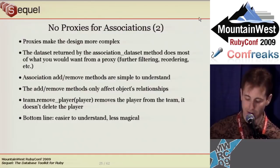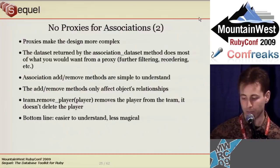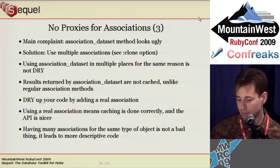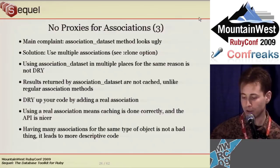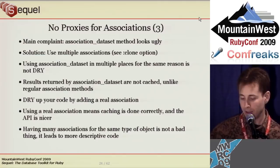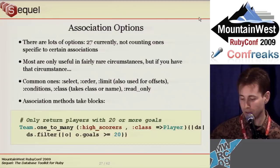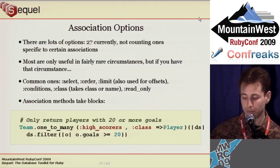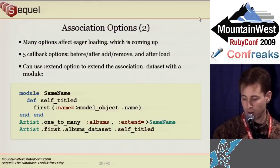Note that add and remove methods affect only the association — the remove method does not delete the object from the database. Some people find 'association_dataset' an ugly method name, but accessing the dataset should be less frequent than accessing the associated objects. If you find yourself using the dataset a lot with different filters, you should add multiple associations with those filters built in — doing so leads to more descriptive code. I added the clone option to make this easier. Clone is only one of about 30 current association options. All association-defining methods also take a block that yields the dataset, which you could use, for example, to make an association a union of multiple datasets.